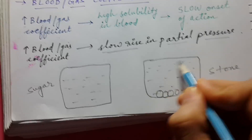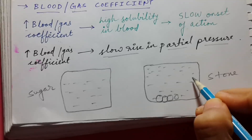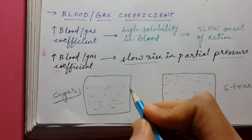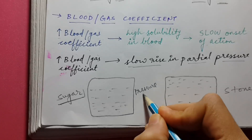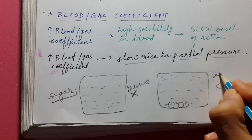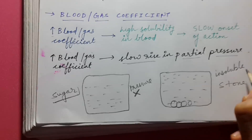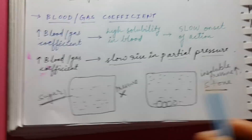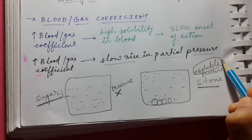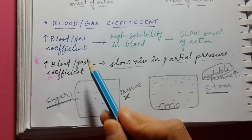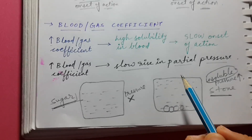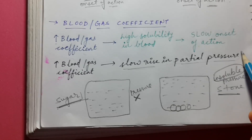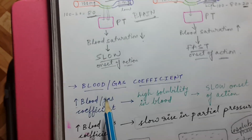This analogy shows that if the anesthetic is soluble in the blood, the pressure will not rise quickly — just like sugar dissolving. If it is insoluble in the blood, the pressure rises rapidly — like adding stones. So if the drug is insoluble, the blood-gas coefficient is low and pressure rises quickly. If it is soluble, the blood-gas coefficient is higher and pressure rises slowly.